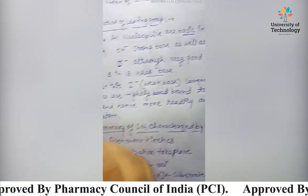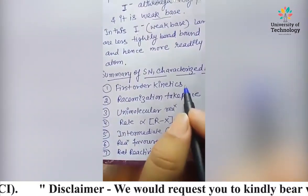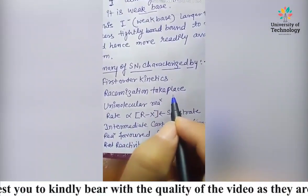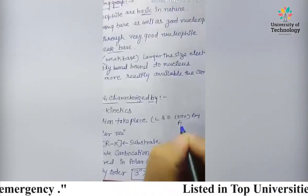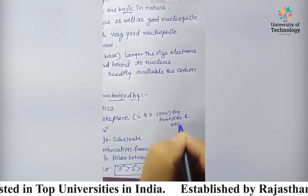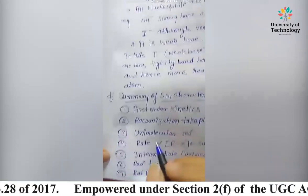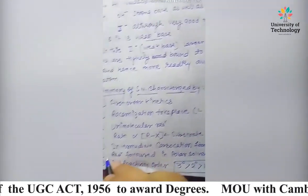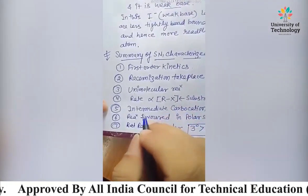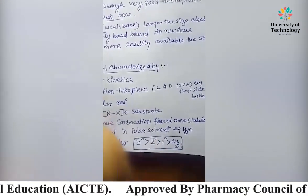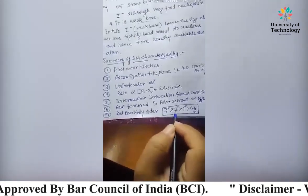To summarize the SN1 reaction: first, it follows first-order kinetics; second, racemization takes place — L-isomers and D-isomers are formed 50% each by front-side and back-side attack; third, it is a unimolecular reaction; fourth, rate is dependent on the substrate molecule; fifth, an intermediate carbocation is formed — the more stable the carbocation, the greater the reactivity; sixth, the reaction is favored in polar solvent; seventh, reactivity order is tertiary > secondary > primary > methyl.